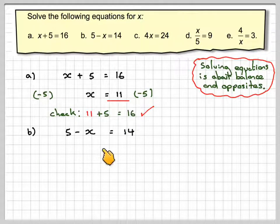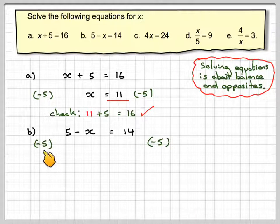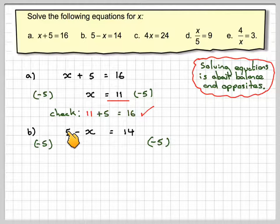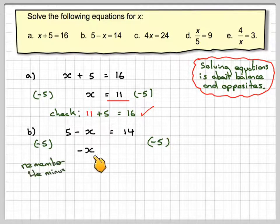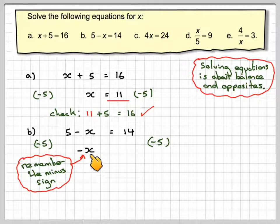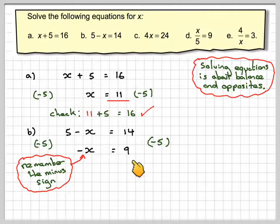B: 5 minus x equals 14. We must do the same thing to both sides, so the opposite of plus 5 is to take 5. This is not the only way to do this problem, but if we do that, then on this side we still have minus x left because there's a minus sign in front of the x. And if we take 5 from 14 we get 9.